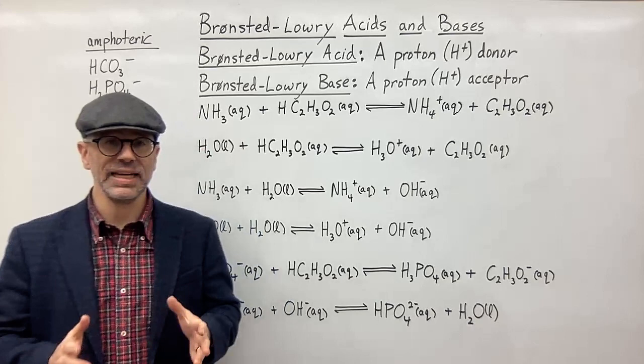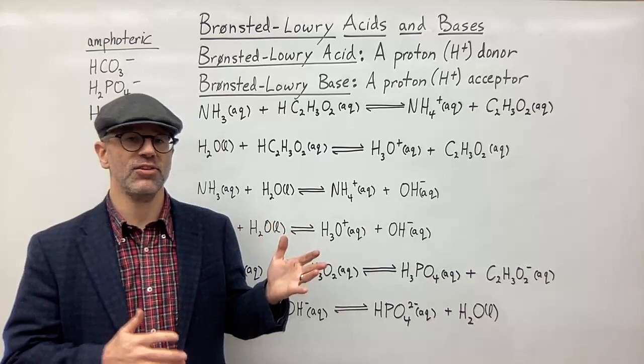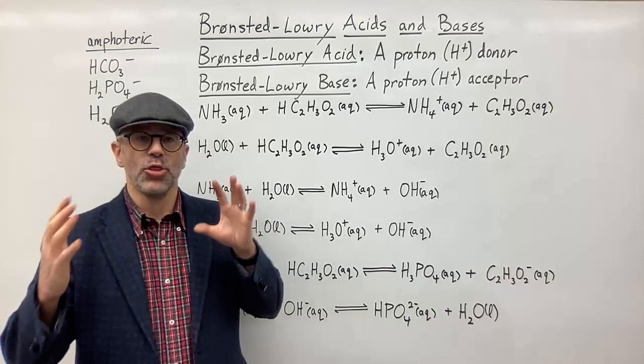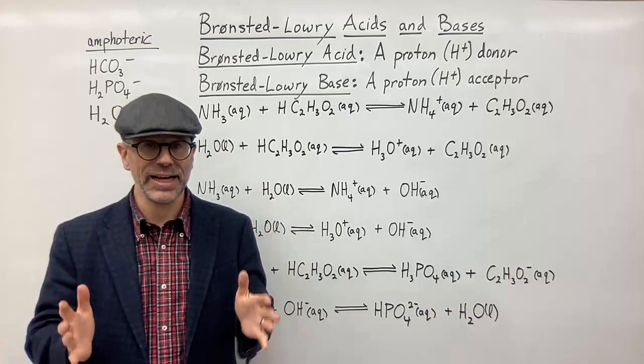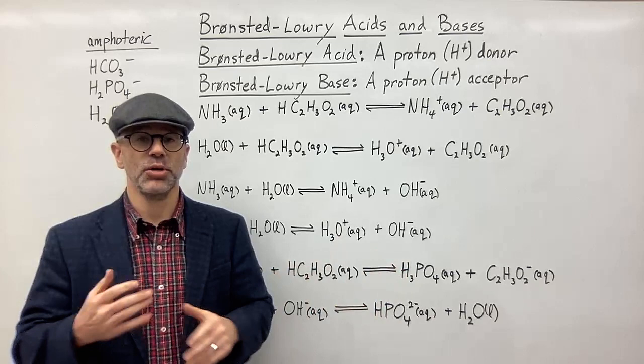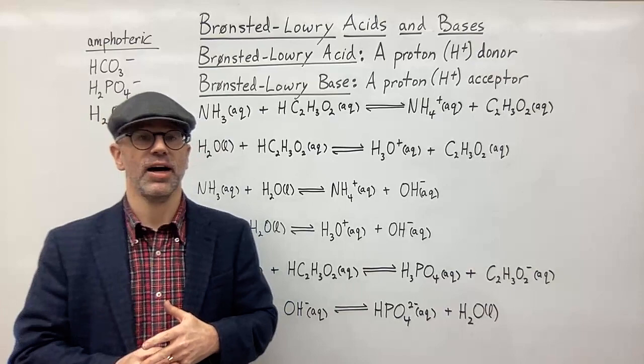The second thing to talk about is the relationship between acids and bases and what is called their conjugates. A conjugate acid-base pair consists of two things related by the difference of one hydrogen, because the H+ donor is going to donate a hydrogen to something else, producing its conjugate — either a conjugate base or a conjugate acid.